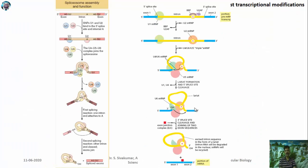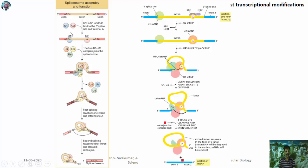The third process is splicing — the removal of introns from the RNA so that exons can be joined. The intron is excised and the exons are ligated during the splicing reaction. This is carried out by a protein complex called the spliceosome, which contains snRNPs — small nuclear ribonucleoproteins containing both RNA and protein — including U1 and U2.